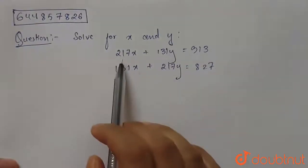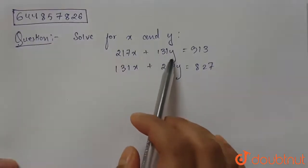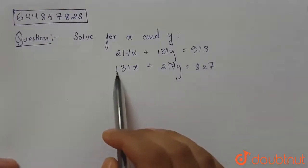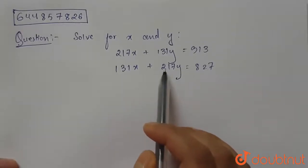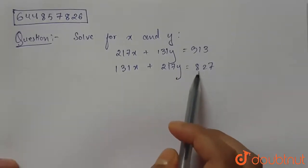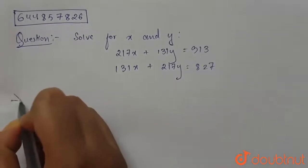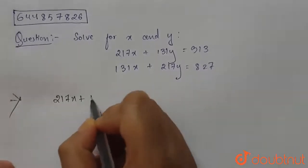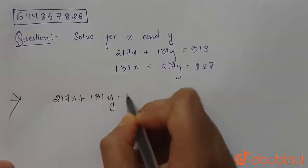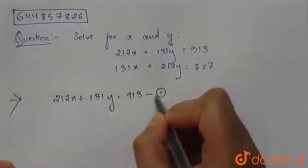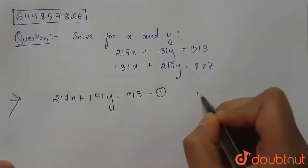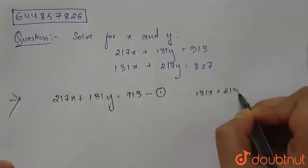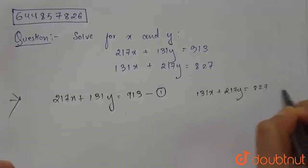Hello everyone. Today our question is: solve for x and y. Equation 1 is 217x + 131y = 913, and equation 2 is 131x + 217y = 827.